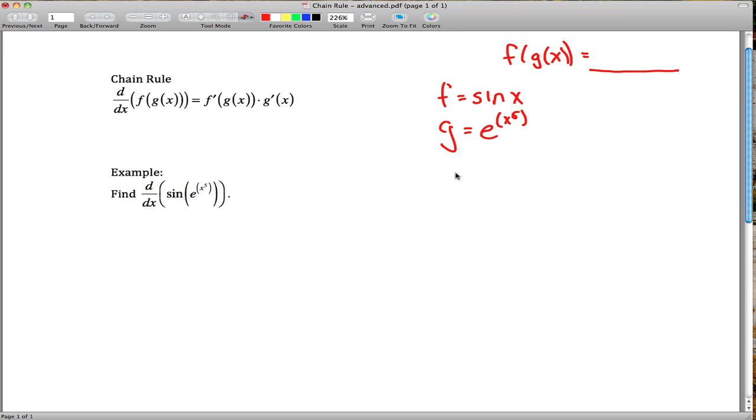And then we go about it just like we went about it before. We know f, we know g, the little pieces, so we can figure out f prime and g prime. f prime, the derivative of sine, is just cosine. G prime, we need the derivative of e to the x to the fifth.